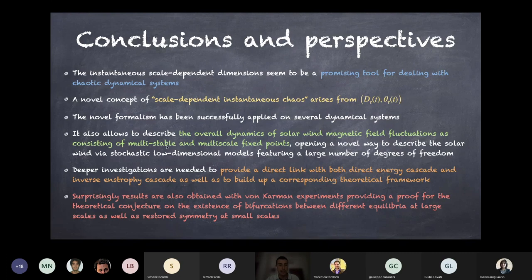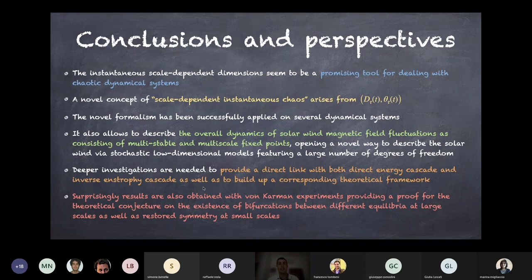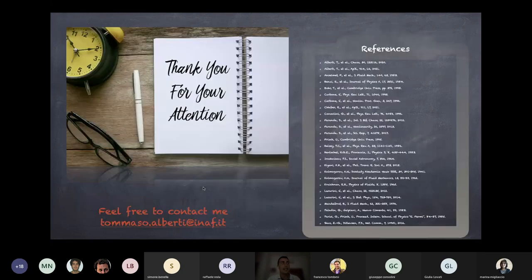What is really interesting is that, thanks to Berenger, we can apply our formalism to the von Kármán experiment — fluid turbulence — and provide a proof of a theoretical conjecture on the existence of a bifurcation between different equilibria at large scales and a restored symmetry at small scale. This seems promising for verifying theoretical expectations in the von Kármán experiment. Thank you for your attention; feel free to contact me.